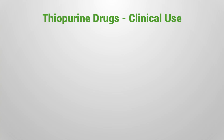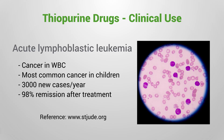Thiopurine drugs are widely used for the treatment of acute lymphoblastic leukemia, the most common cancer in children under the age of 20. There are about 3,000 new cases each year, and treatment with thiopurine drugs can lead to remission in 98% of patients within the first year of treatment. In addition, 90% of patients can be cured after 10 years of remission.